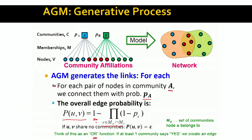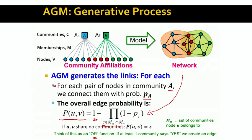This is an increasing function in the number of common communities. The more communities a pair of nodes has in common, the more terms appear in the product. Each element of this product is a number smaller than one, so multiplying more such numbers together gives a smaller total product, and one minus a small number is a bigger number. This means the more communities a pair of nodes has in common, the more likely they will be to link with each other. For every pair of nodes we compute the total probability of connection, flip a coin, and if yes, we create the connection.